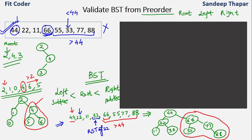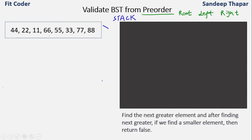The naive algorithm would be: for each node, find the first greater element and then check if all elements to its right are also greater, applied recursively — but that is not efficient. The efficient method uses a stack. The approach is to find the next greater element, and if after finding it we encounter a smaller element, we return false, meaning the array is not a valid pre-order traversal of a BST.